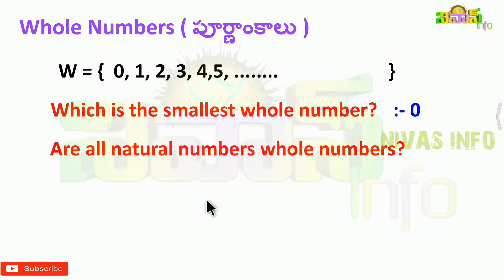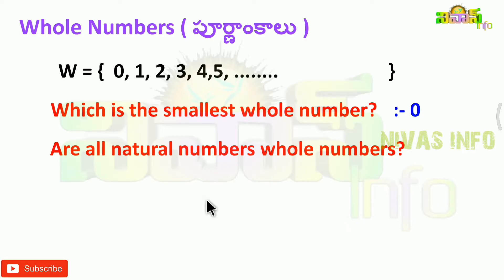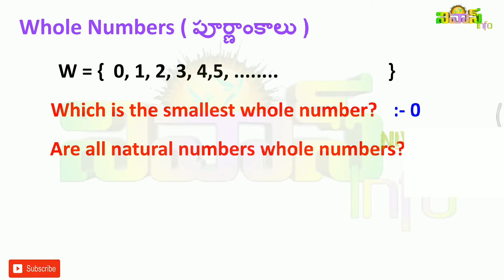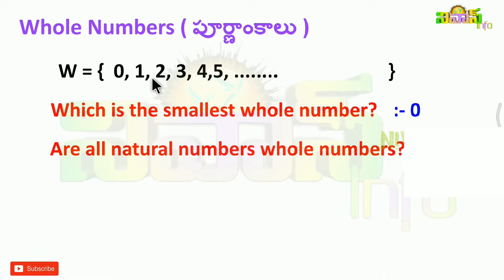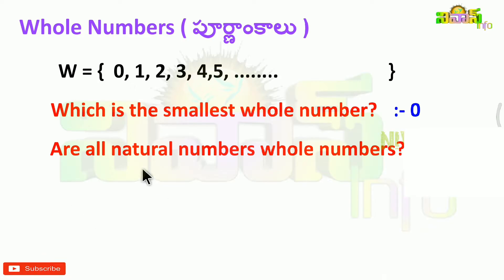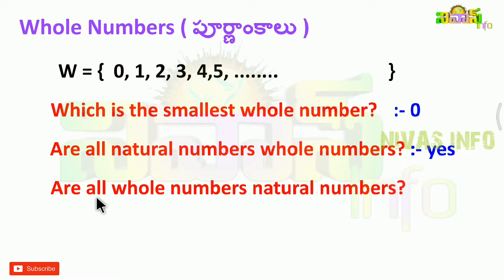Next: are all natural numbers whole numbers? Yes — all natural numbers are whole numbers. But are all whole numbers natural numbers? Natural numbers start from 1, and whole numbers start from 0, so we need to check. The answer: all natural numbers are whole numbers. But all whole numbers are NOT natural numbers.